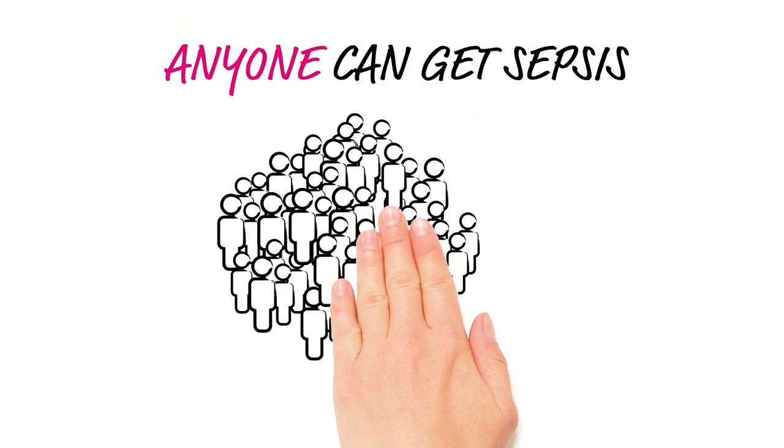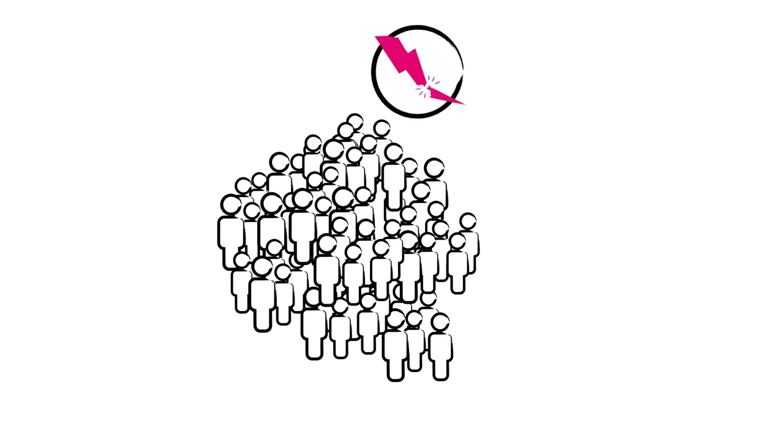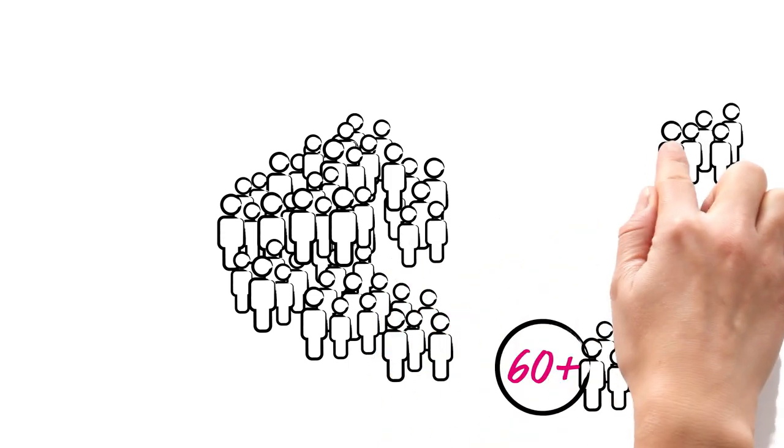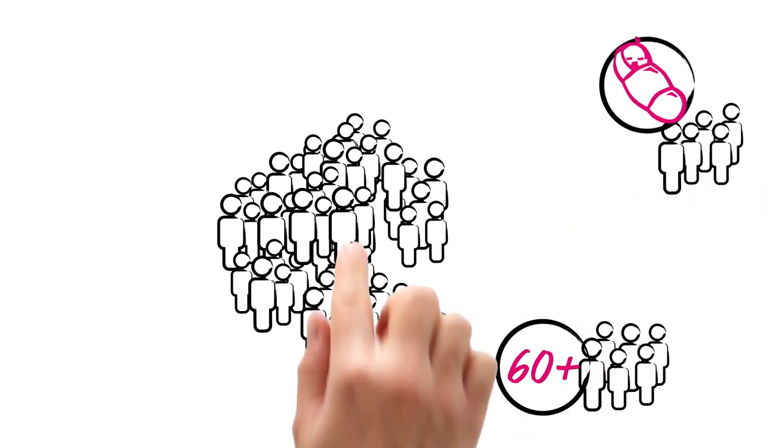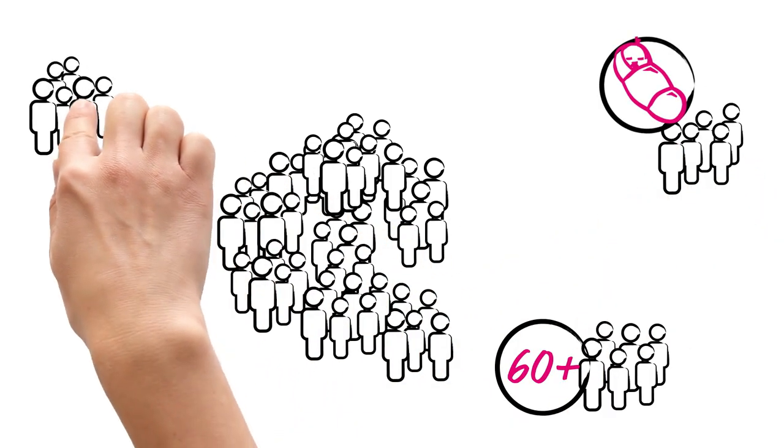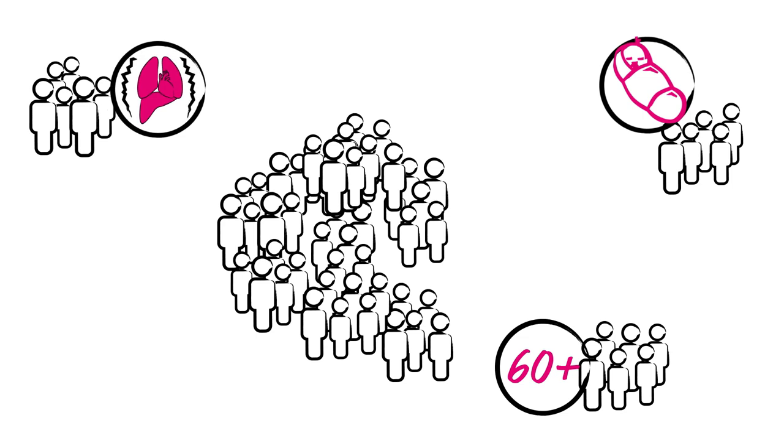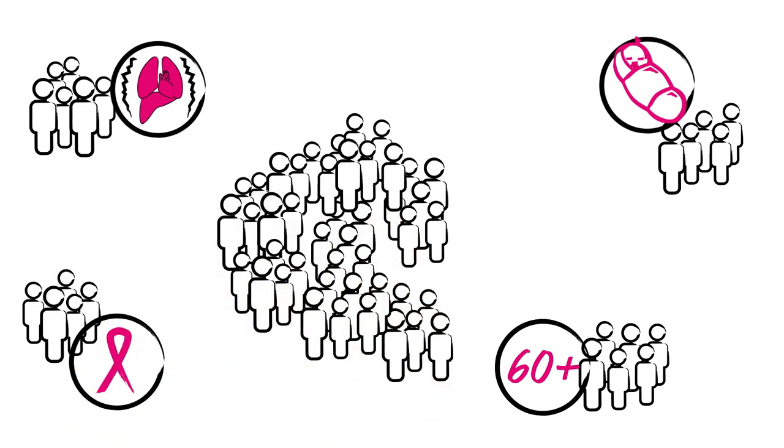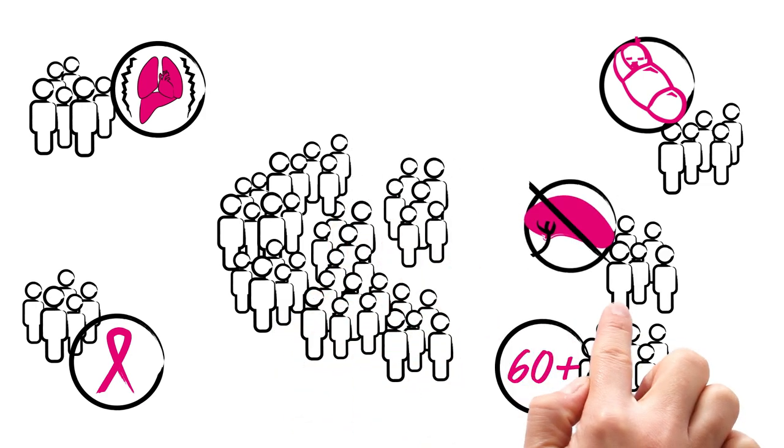Anyone can get sepsis. People with a weakened immune system are especially at risk. This includes adults over 60, young children under 1, people with chronic disease of the lung, liver, or heart, people with diabetes or AIDS, and people without a spleen.